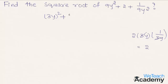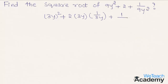Now let us write the second term 2 as 2 × 3y × 1/3y. The third term is 1/9y², which we can write as (1/3y)², since 3y is the root of 9y². We observe that this expression is in the form a² + 2ab + b² = (a + b)².